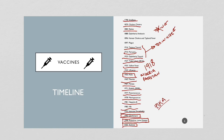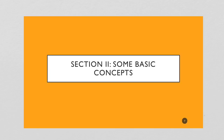This concludes the short history of vaccines. Stay tuned for the next chapter, in which we're going to talk about some basic concepts in vaccine epidemiology, like immunology, bacteriology, and virology. Thank you.